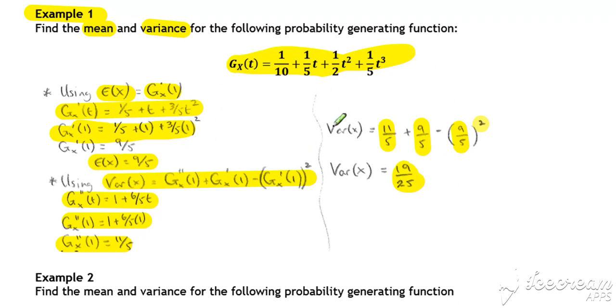So that's the sort of most likely scenario that you're going to have to work through with mean and variance using these differentiation results. But as I said before, one of the key advantages of the probability generating function is these results where you can find the expected value by differentiating. It's quite a neat way of working out expected values and variances.